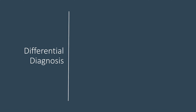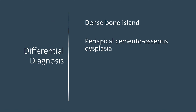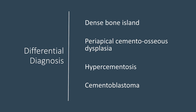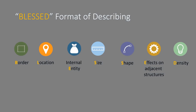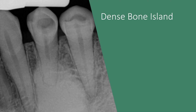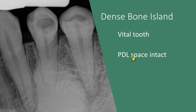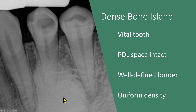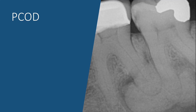The differential diagnosis would include dense bone island, periapical cemento-osseous dysplasia, hypercementosis, and cementoblastoma. Using the BLAST format of description, it is easy to arrive at the correct diagnosis. A dense bone island is associated with a tooth that is vital. The periodontal space of such a tooth is intact, the border is well defined, and the density is uniform or homogeneous. We had discussed this radiograph earlier showing the example of periapical cemento-osseous dysplasia.